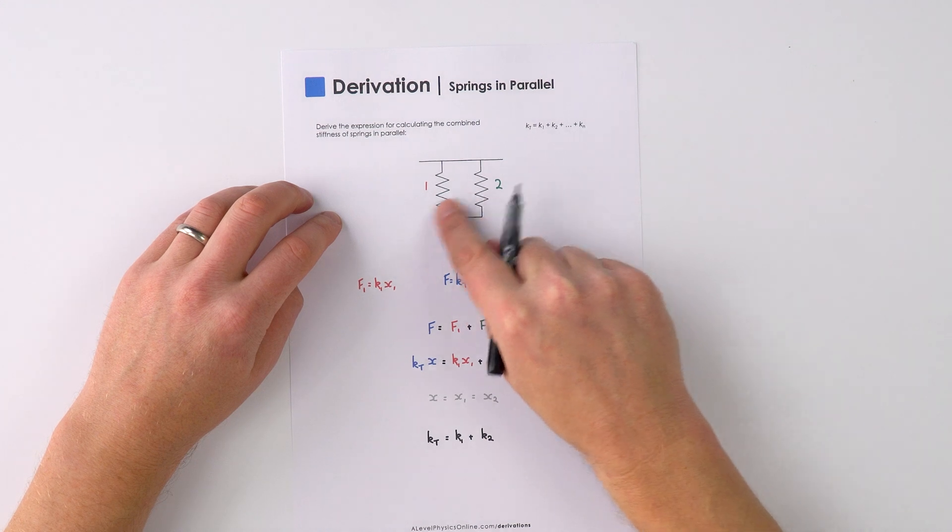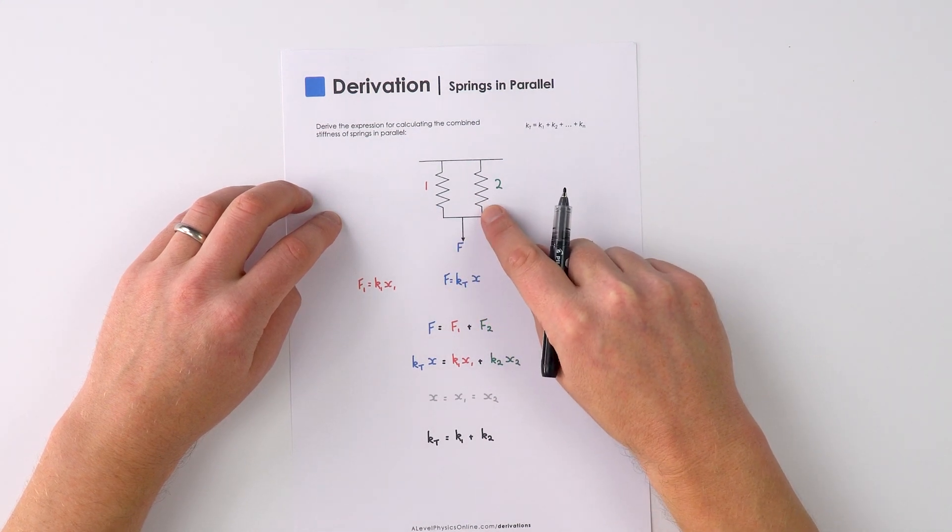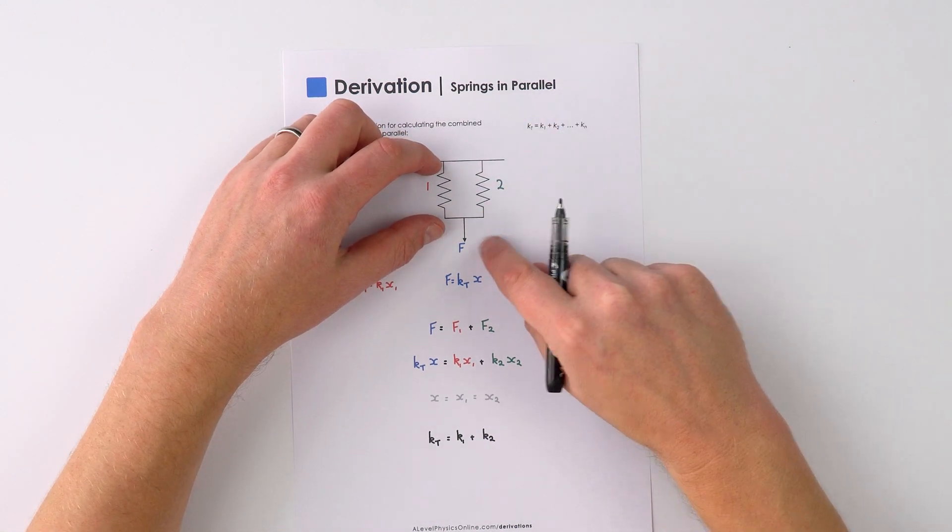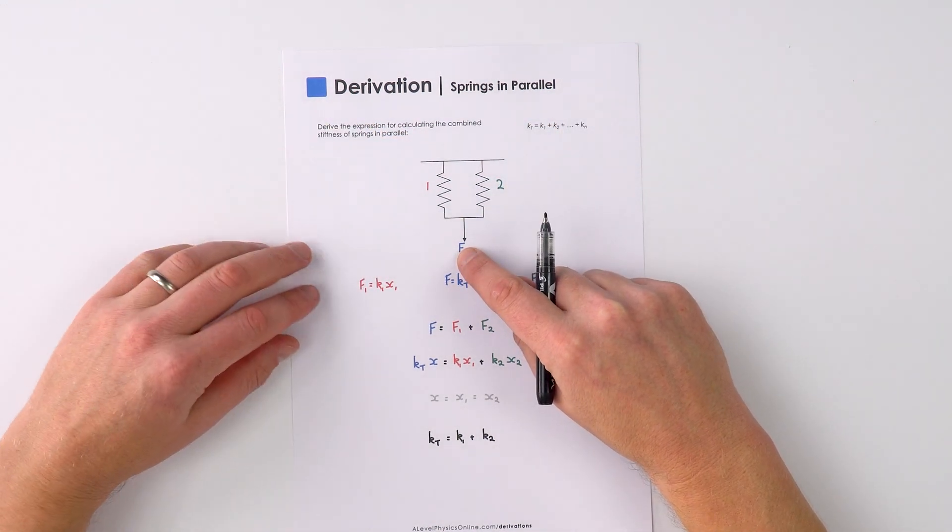If we have two springs in parallel, we can work out their overall spring constant. So we've got spring number one, spring number two set up in parallel with a force F being applied.